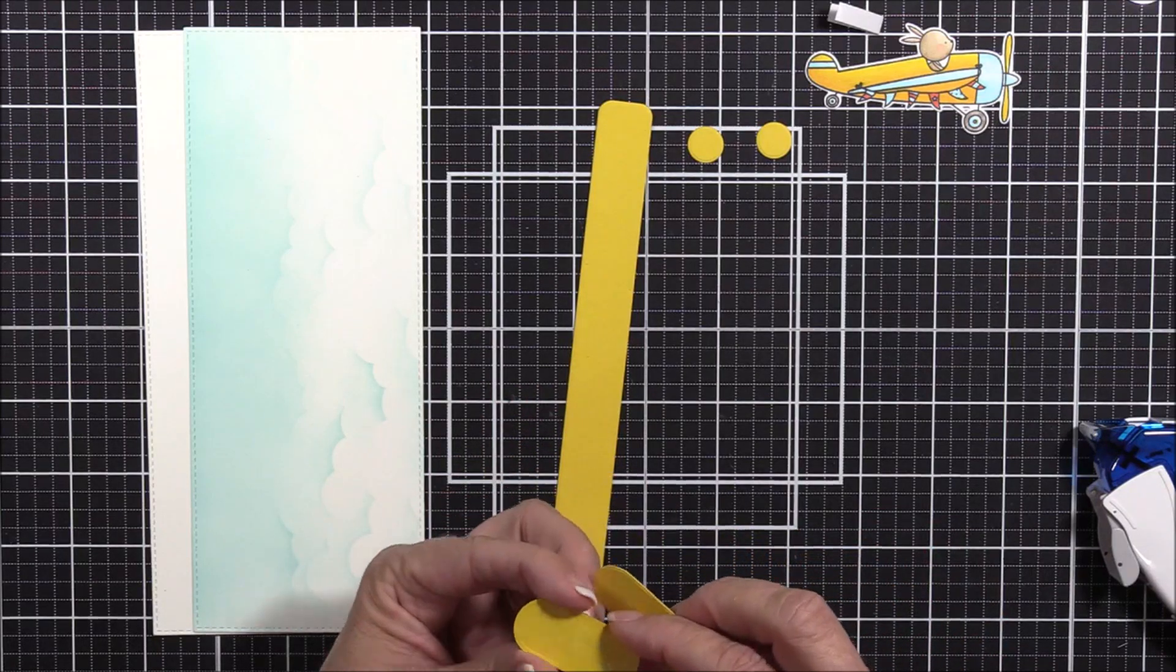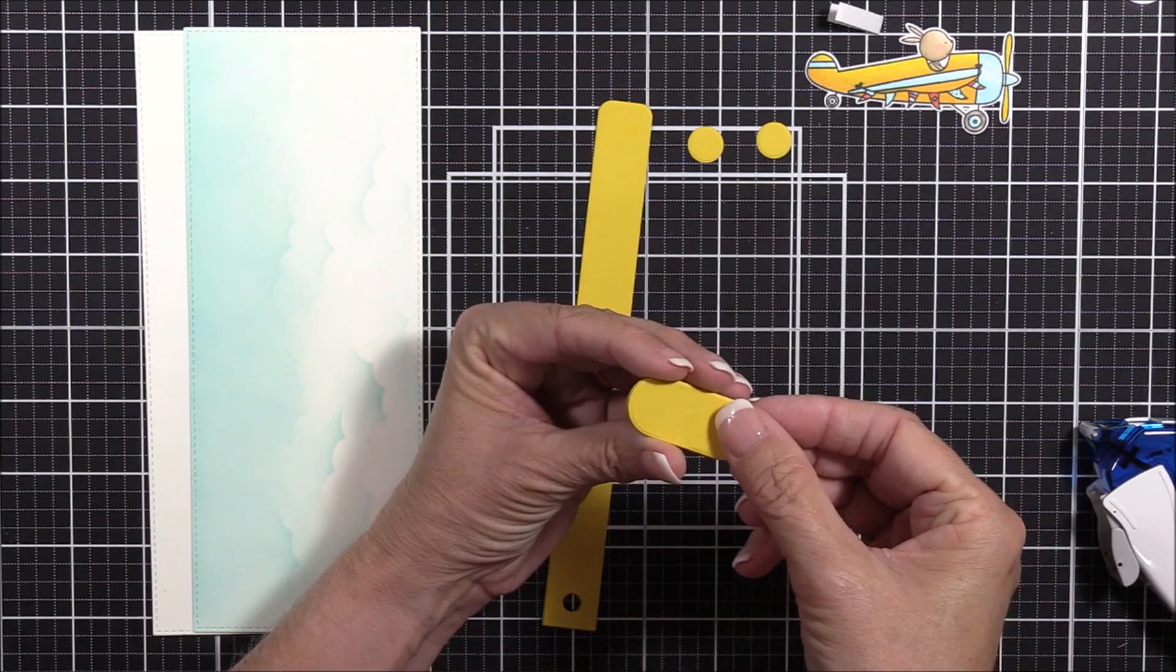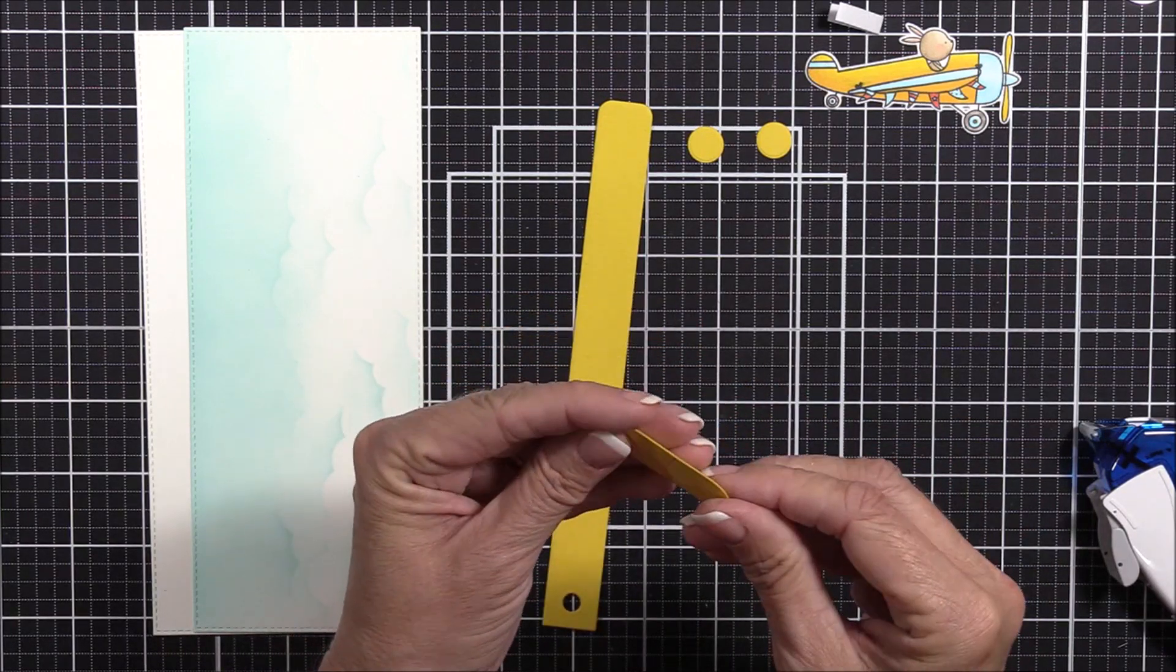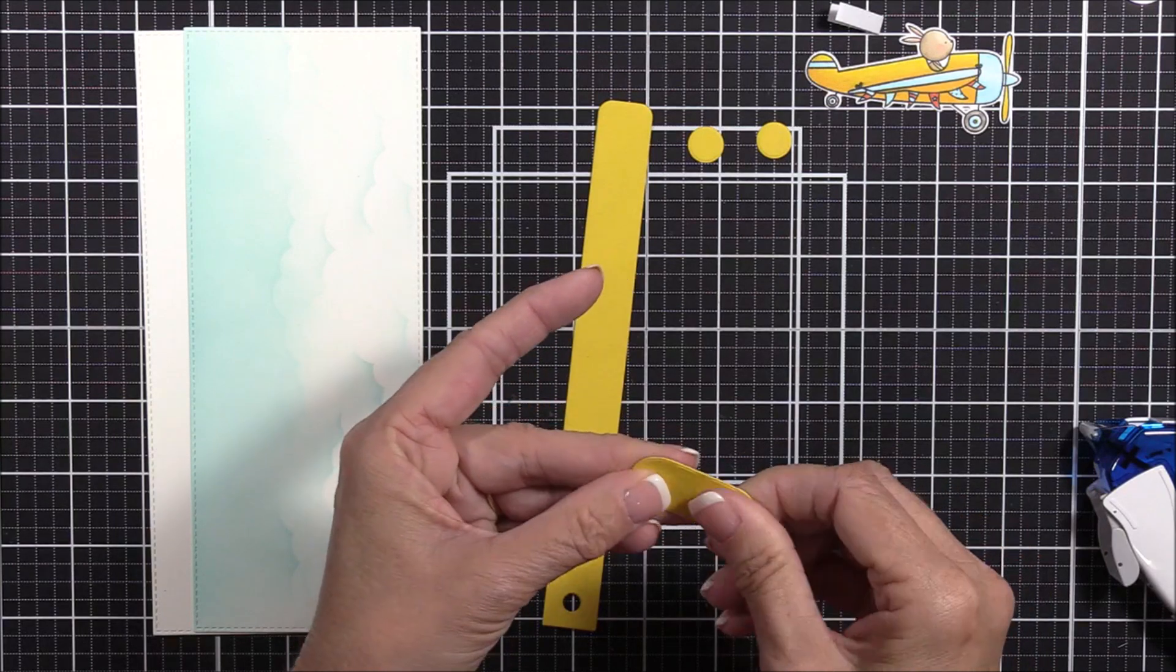You'll notice that one end of each of the tabs has an embossed circle on it. I always adhere the tabs together so that the embossed circles are on the same end, but honestly, it doesn't make a difference in assembling the card.